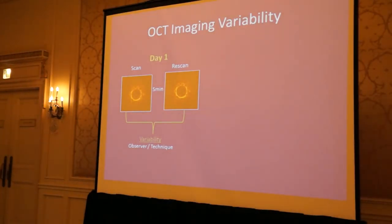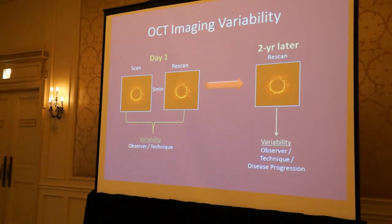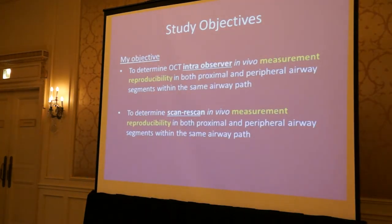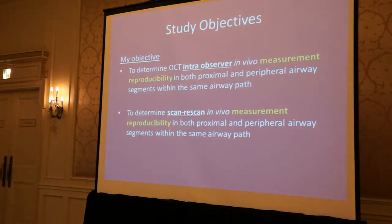Once we understand the observer and technique variability introduced to this method, we wish to implement longitudinal studies to quantify disease progression. My specific objectives were to determine the OCT intra-observer in vivo measurement reproducibility in both the proximal and peripheral airway segments within the same airway path, as well as to determine the scan and re-scan in vivo measurement reproducibility in both the proximal and peripheral airway segments.